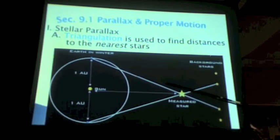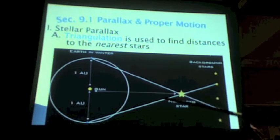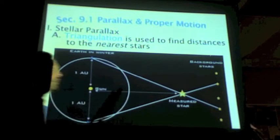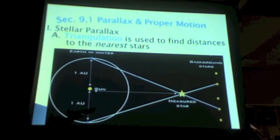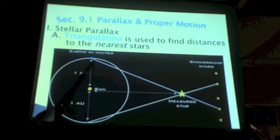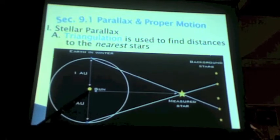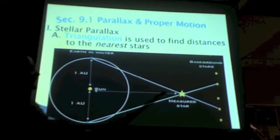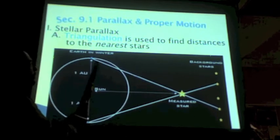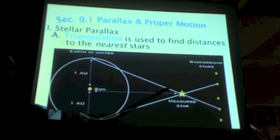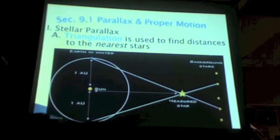Now, look what happens. If we can measure that shift, if we can measure that angle, which we can, now look what we've set up. We've set up a nice triangle. We know this side of the triangle, the distance from the earth to the sun. We know this, what we want to know is this, the distance from us to this star.